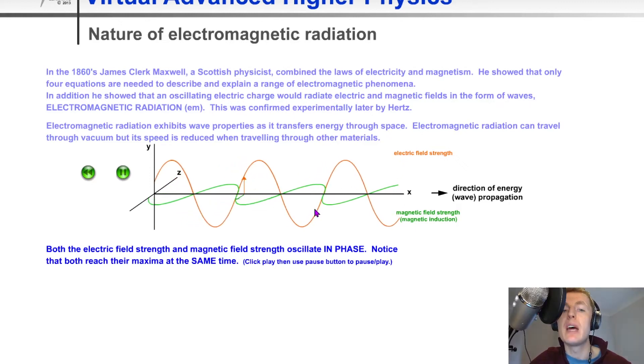We should also be able to see that the electric field in orange and the magnetic field in green are both perpendicular to each other, and these are also perpendicular to the direction of wave travel.